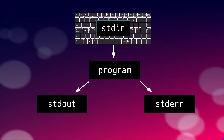Your Linux system handles information in the following way. The standard input is usually what is produced by your keyboard — so this is what you type. This input goes to the program, and the program processes this information. It outputs two kinds of information: the standard output, which is what you expected the program to produce, and the standard error, which indicates what went wrong during processing.